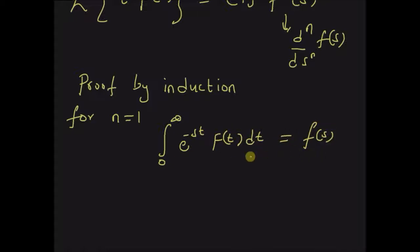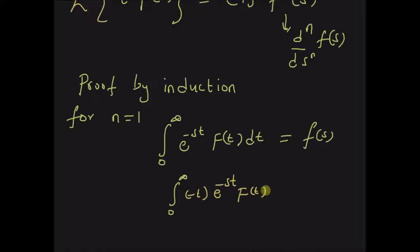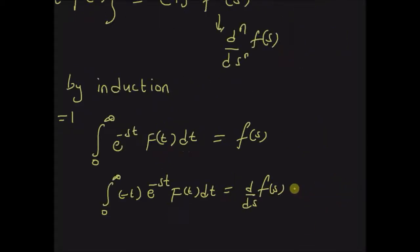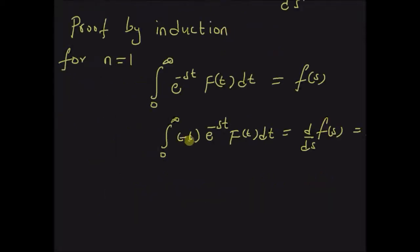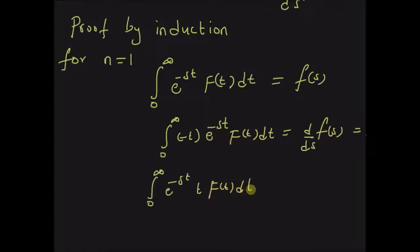Now differentiating with respect to s on both sides, we have the integral from zero to infinity of (-t) · e^(-st) · f(t) dt, which is equal to the derivative of F(s) with respect to s, which is F'(s). By sending the minus one to the right side, we can clearly see that this equals the integral from zero to infinity of e^(-st) · t · f(t) dt.